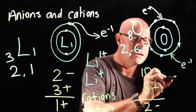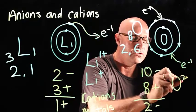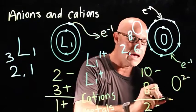And the way we express that is O, two minus. And they are called anions.